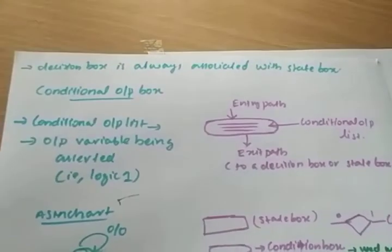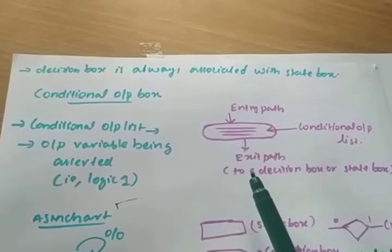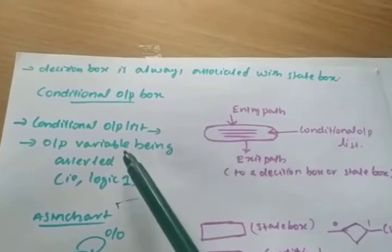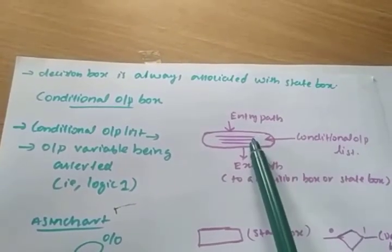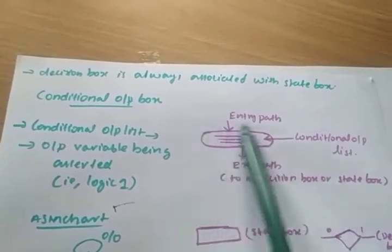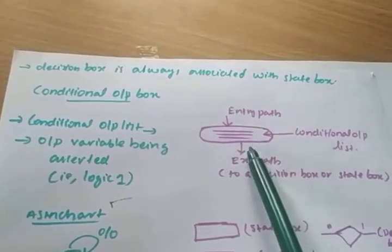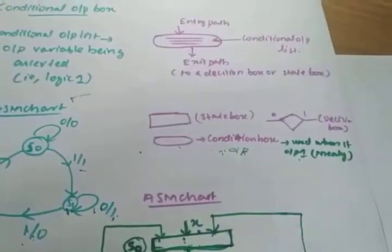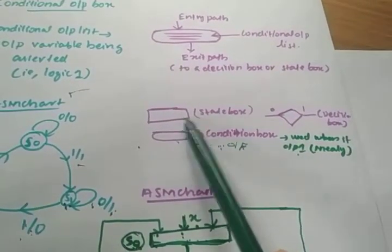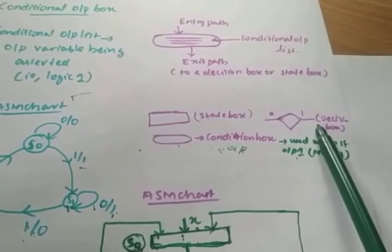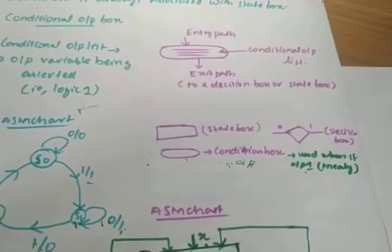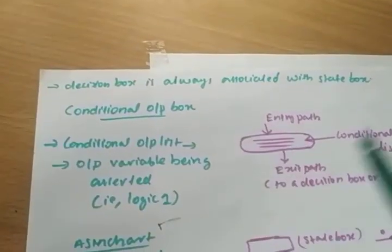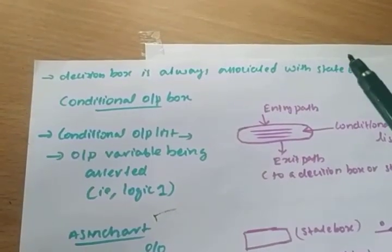Now, what is the condition box? The condition box is where the output is normally represented. It also has an entry point and an exit point, and the output is represented within it. So we have three basic blocks: the state box, the condition box, and the decision box — these are the three basic blocks of an ASM chart.